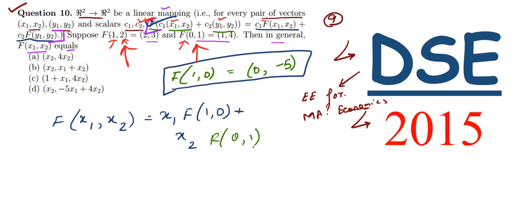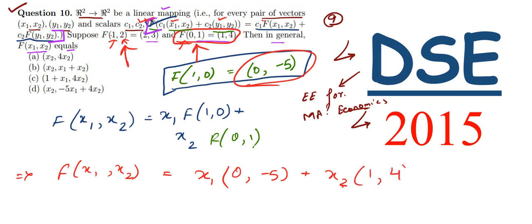Solving this, F(x₁, x₂) = x₁·(0, -5) + x₂·(1, 4). Here we have F(1, 0) which is (0, -5), and F(0, 1) which is (1, 4). So we can solve this easily.